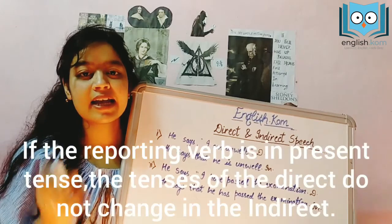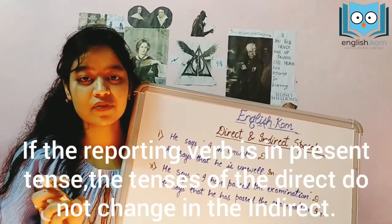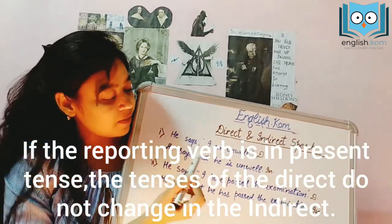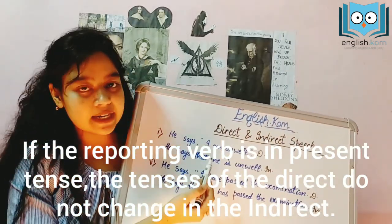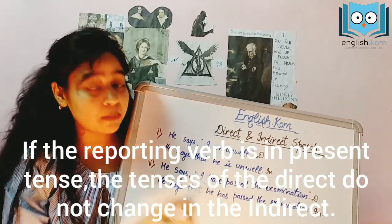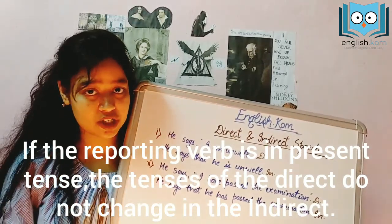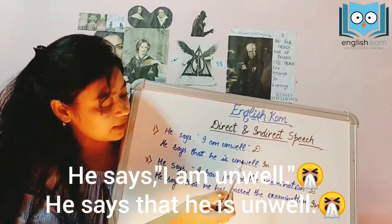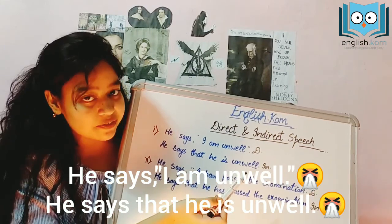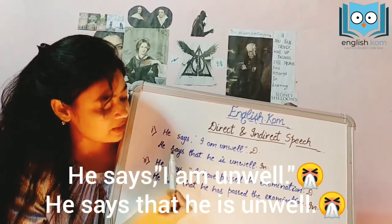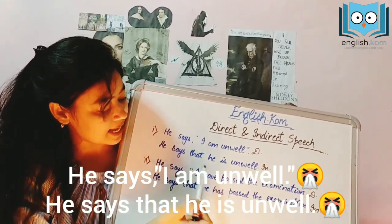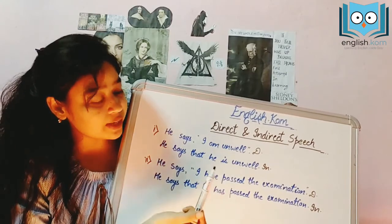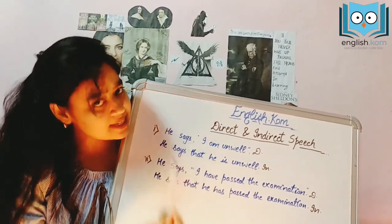The next rule is that if the tense of the reporting verb is present tense, then while converting direct to indirect form, the tense does not change. For example, he says, 'I am unwell.' This is the direct form, and in the indirect form we have: he says that he is unwell. So the tense does not change.